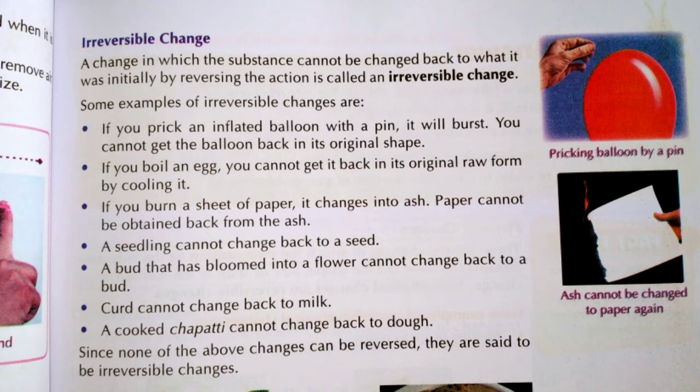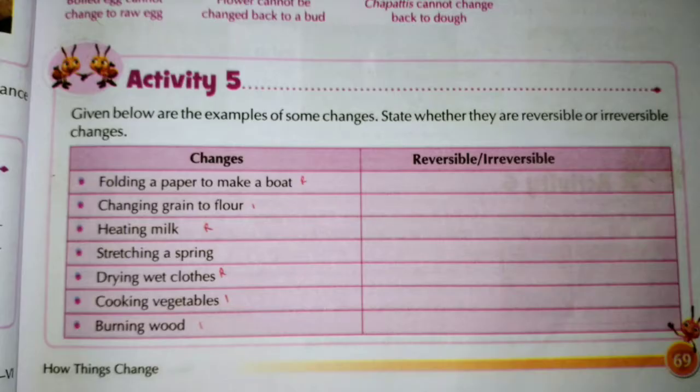A change in which the material cannot be changed back to its original form is called an irreversible change. Now let us do one activity on page number 69, Activity 5. They have written some changes and we have to classify each as reversible or irreversible.